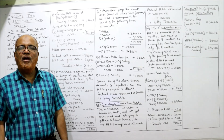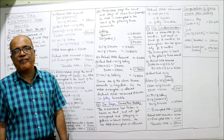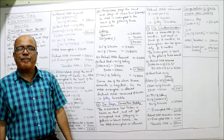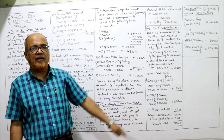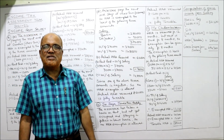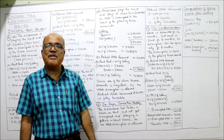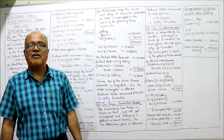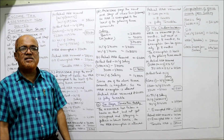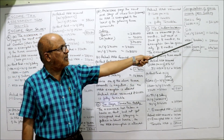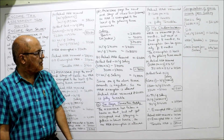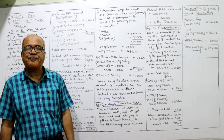Gross income from salary for Mr. Chidambaram: Basic pay ₹26,800 × 12 = ₹3,21,600. Dearness allowance 45% of ₹3,21,600 = ₹1,44,720. Taxable HRA ₹28,040. Total gross income from salary = ₹4,94,360. Problem 11 completed.